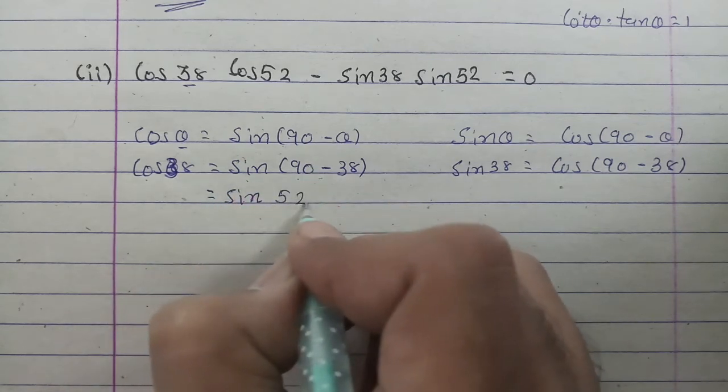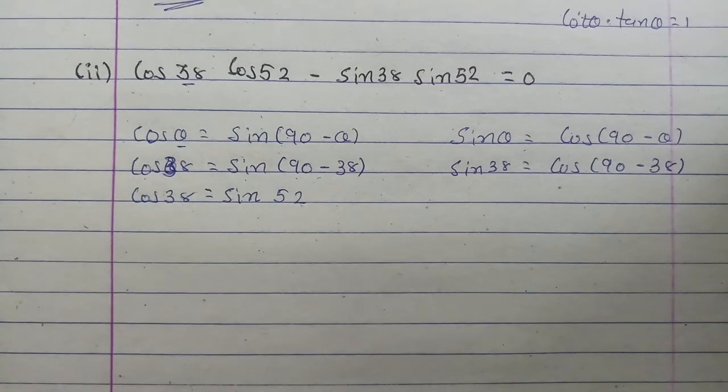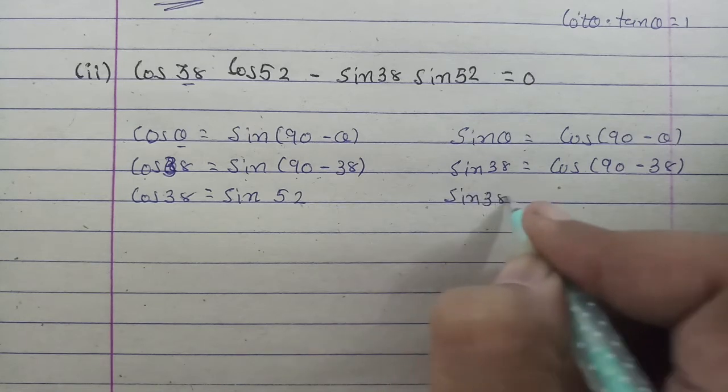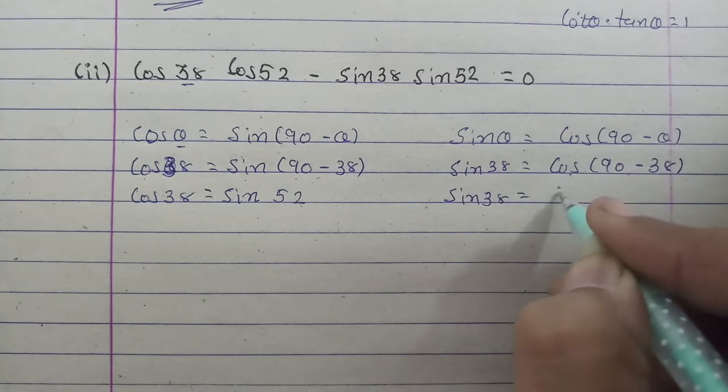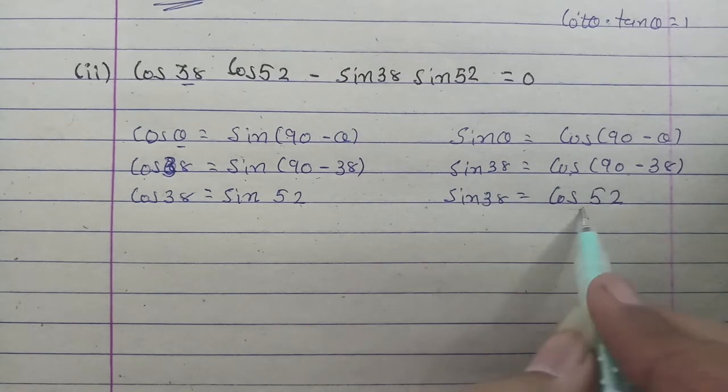Same thing, sin 38° will remain as it is. Cos(90° - 38°) which is cos 52°, so sin 38° can be written as cos 52°.